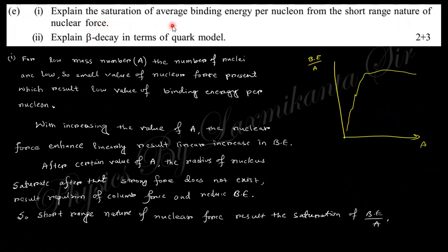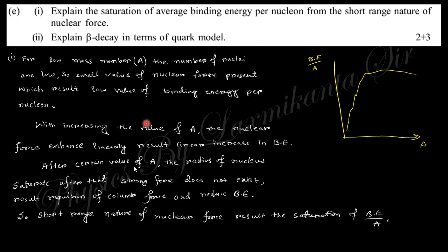Next question: explain saturation in the average binding energy per nucleon from the short-range nature of nuclear force. At low atomic mass numbers, there are fewer particles, so the strong force is low and attraction is small. As the number of particles increases, the strong force increases up to a certain range. Because the nuclear force is short-range, beyond a certain nuclear radius the force saturates. With further increase in size the nuclear force reduces, balancing the repulsion, leading to saturation in binding energy per nucleon.